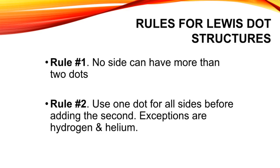Rules for Lewis dot structures: Rule number one, no side can have more than two dots. Rule number two, use one dot for all sides before adding the second. Exceptions are hydrogen and helium.